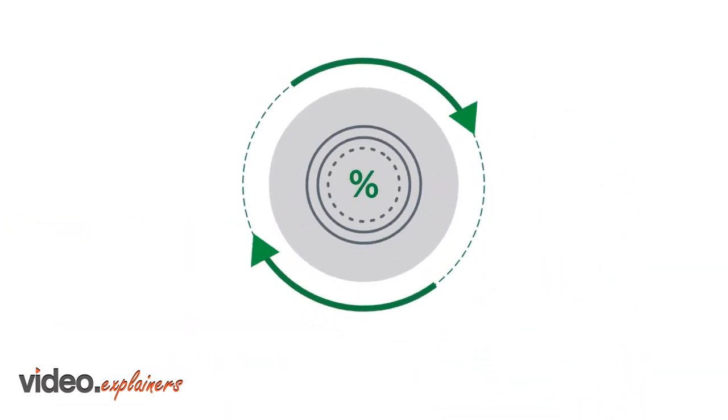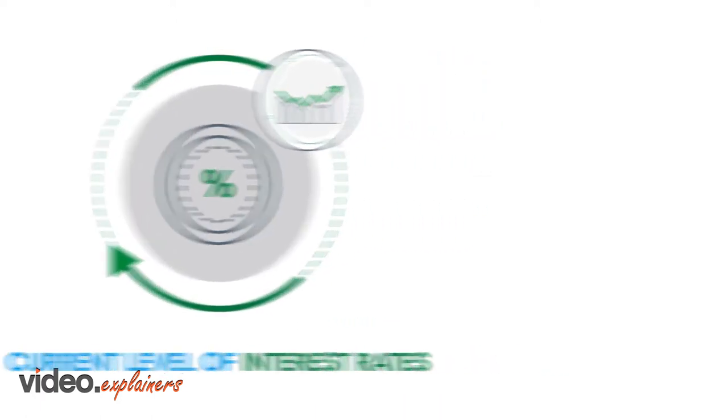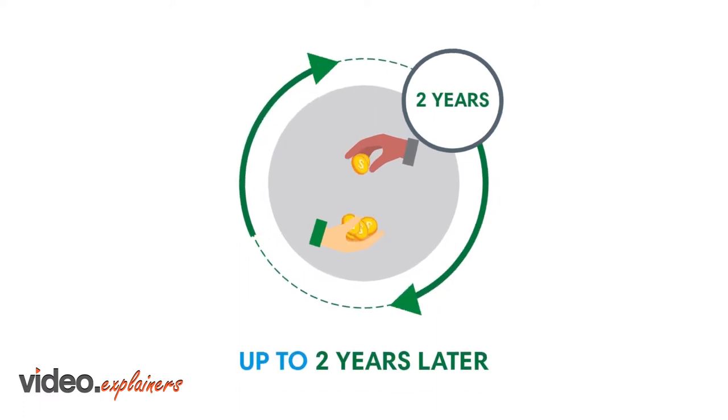The Forward Starting Advance is a fixed-rate advance, with the rate determined by the current level of interest rates. But unlike other advances, the disbursement of funds doesn't happen until up to two years later.